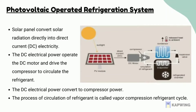In a photovoltaic-operated refrigeration system, the solar panel is used to convert solar radiation directly into direct current electricity. This DC electricity powers the DC motor and drives the compressor to circulate the refrigerant.